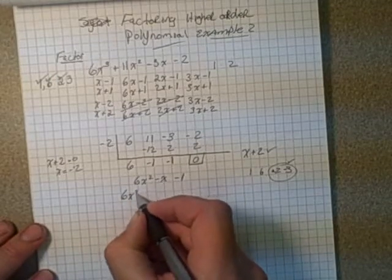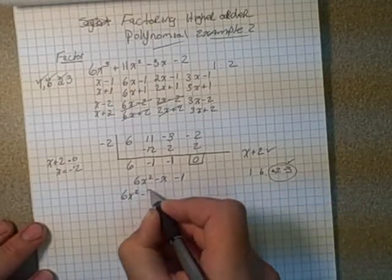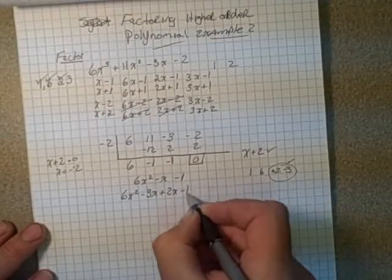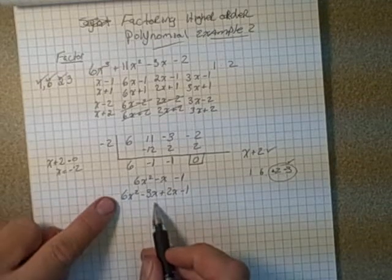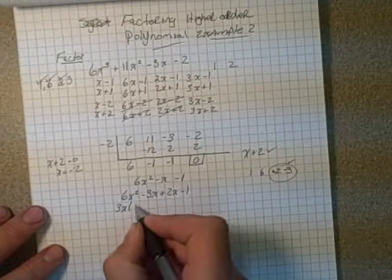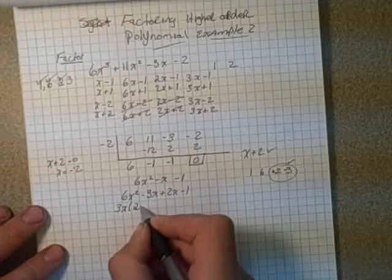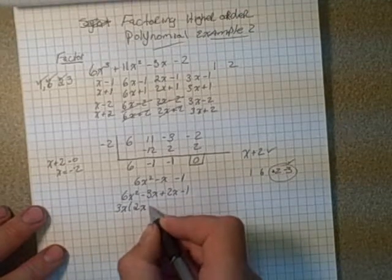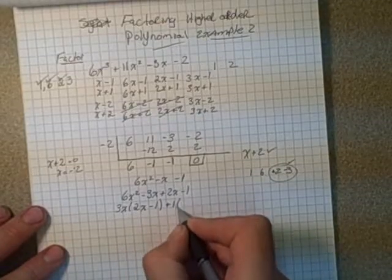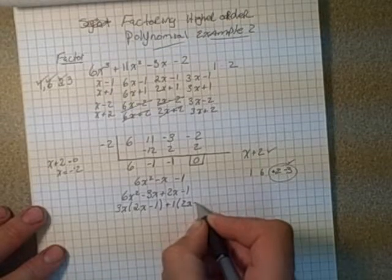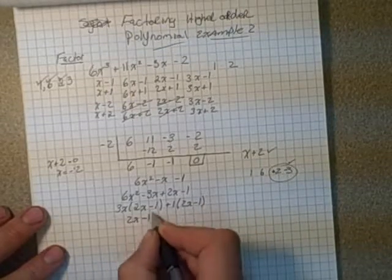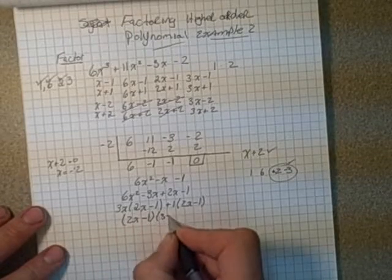So 6X squared, let's put in negative 3X and positive 2X minus 1. We can see now that if we group these two, we can take a common factor of 3X out. That would give us 2X minus 1. Here we have that already, so let's put a positive 1 here. Our two factors become 2X minus 1 times 3X plus 1.